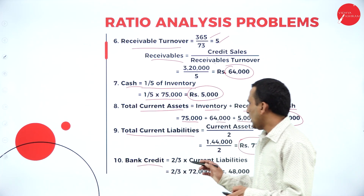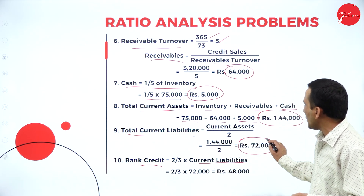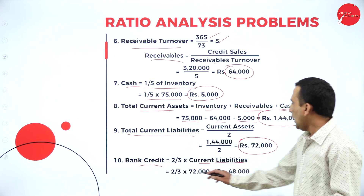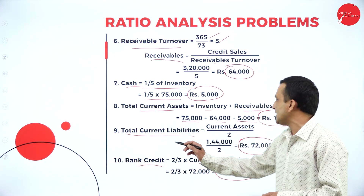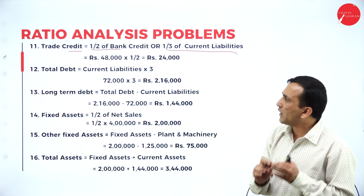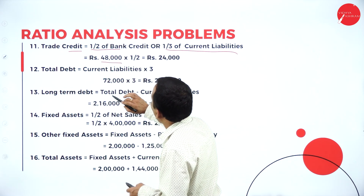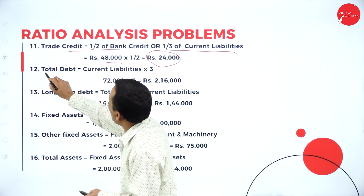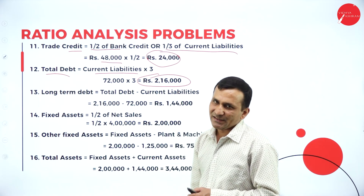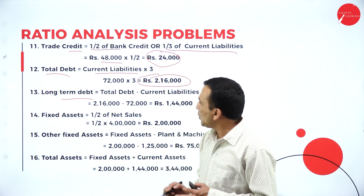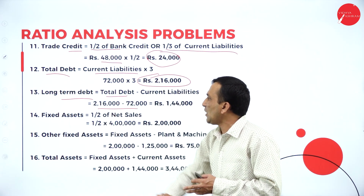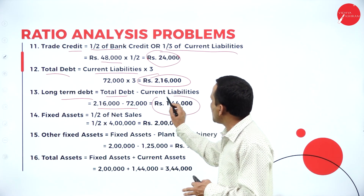Bank credit is 2/3 of current liability: 2/3 into 72,000 gives 48,000. Trade credit is 1/2 of bank credit, or 1/3 of current liability — both give the same answer: 48,000 into 1/2 equals 24,000 trade credit. Total debt is current liability into 3 times: 72,000 into 3 gives total debts of 2,16,000. Long-term debt is total debt minus current liability: 2,16,000 minus 72,000 gives long-term debt of 1,44,000.